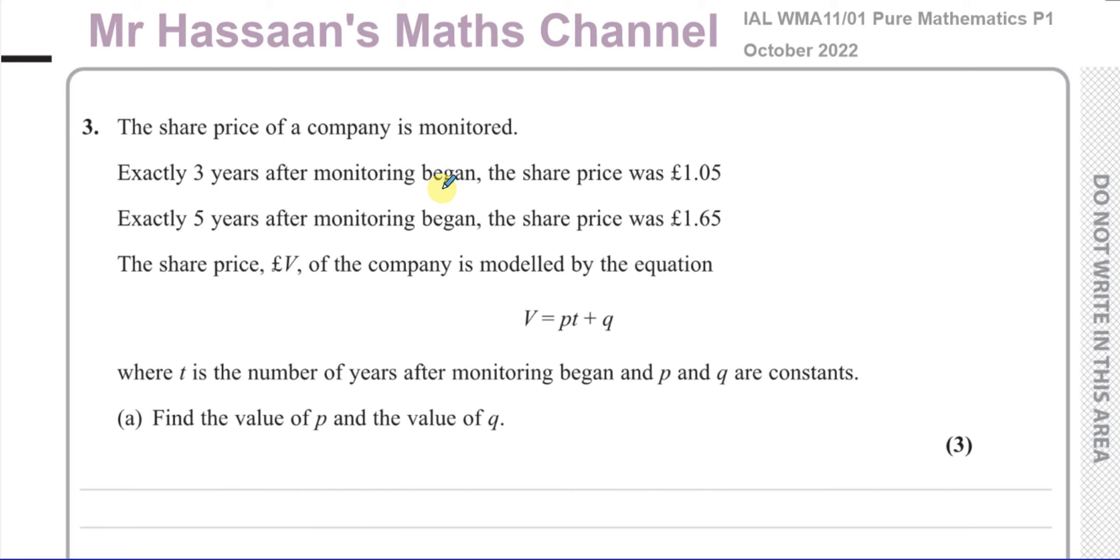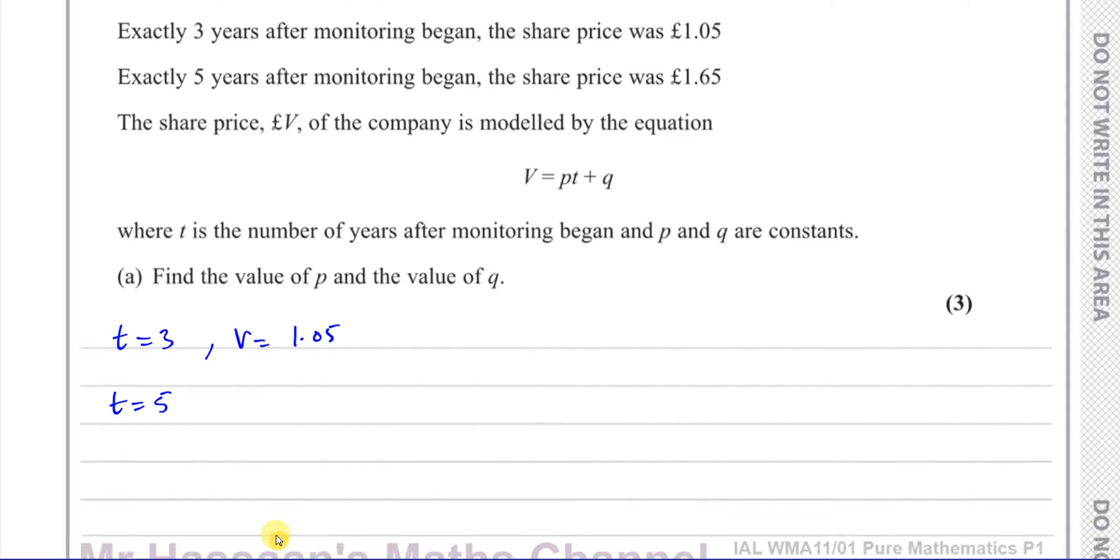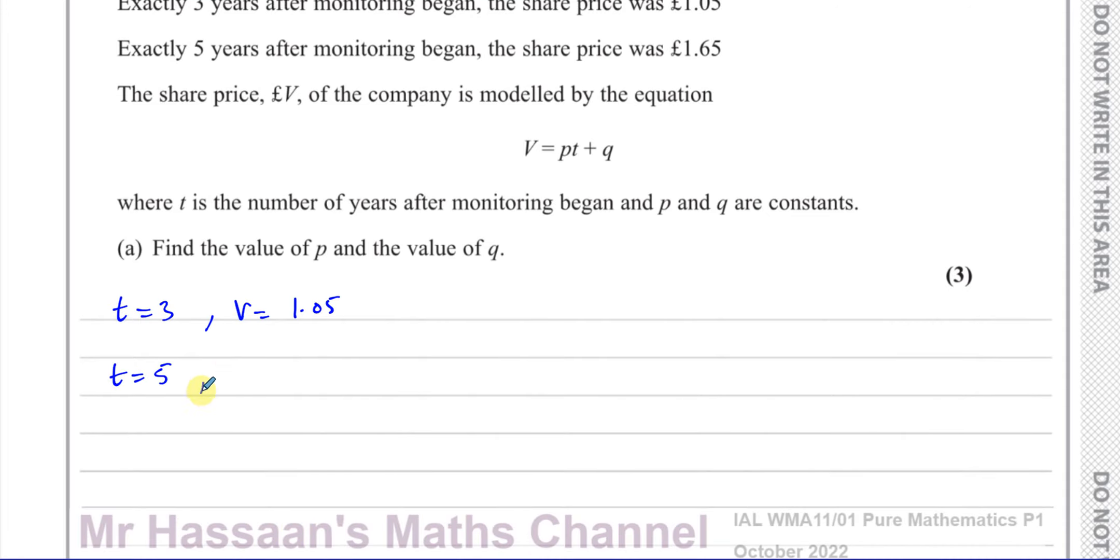So three years after monitoring began, that means when T equals three, and the price V was £1.05. And we know that when five years after monitoring began, T equals five, the share price was £1.65. So from these two bits of information, we can form two simultaneous equations.